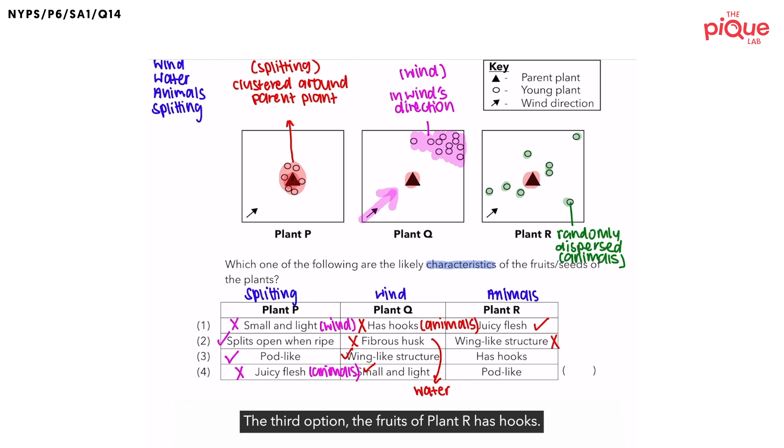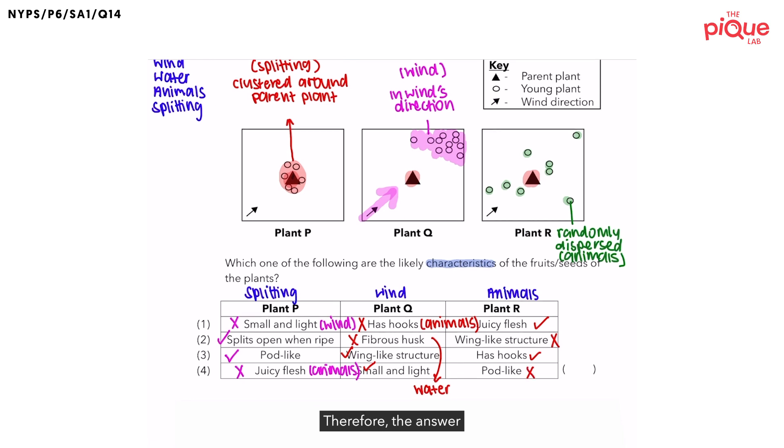The third option, the fruits of plant R has hooks. The hooks get attached to the outer covering of the animal. And when the animals move, the seeds are carried further away from the parent plant, and the seeds will then fall off and be dispersed further away from the parent plant randomly. The last option, pod-like structure. Is this a characteristic of seeds that are dispersed by animals? No. This is most likely to be dispersed by splitting, not animals. Therefore, the answer for this question is option number 3.